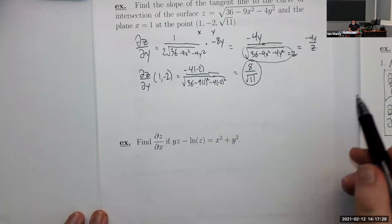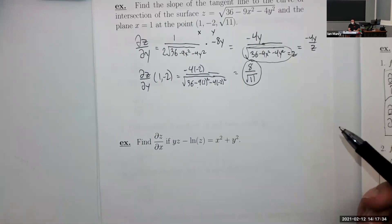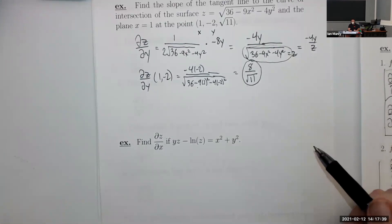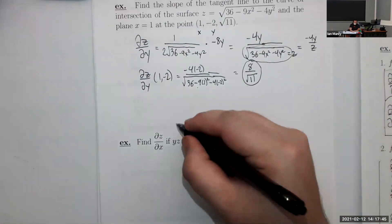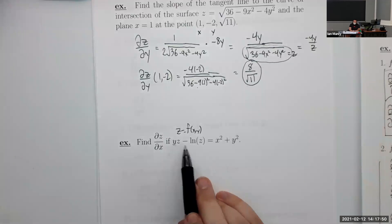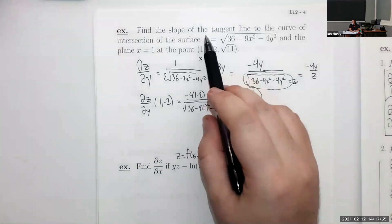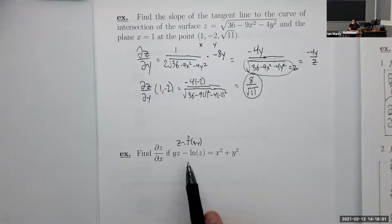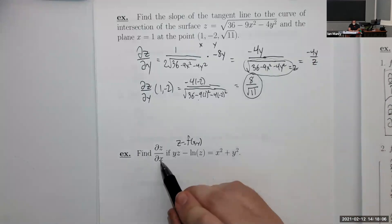Partial derivatives have a lot in common with implicit differentiation, and it turns out you can do implicit differentiation with partial derivatives. In this problem, z is a function of x and y, but z is mixed into the formula rather than being explicitly solved for. We need implicit differentiation to figure out this partial derivative.